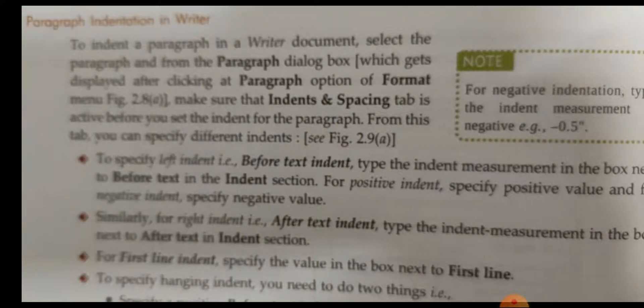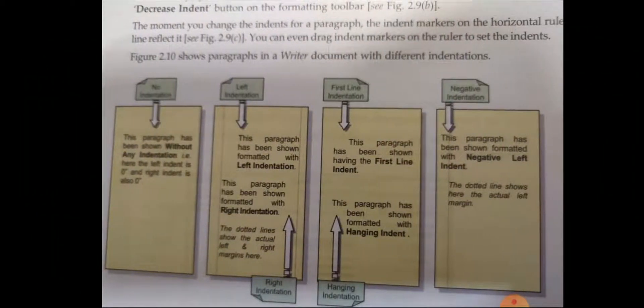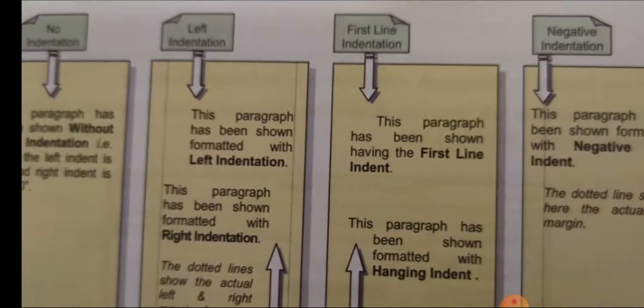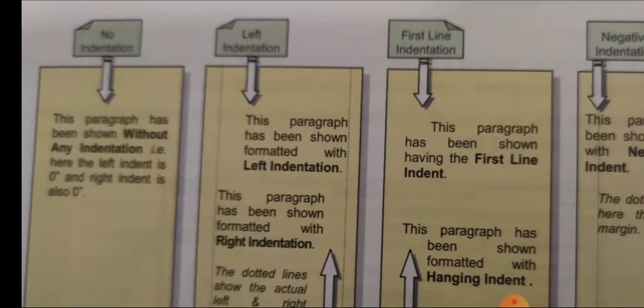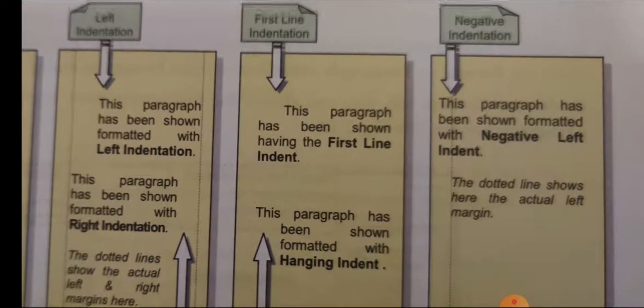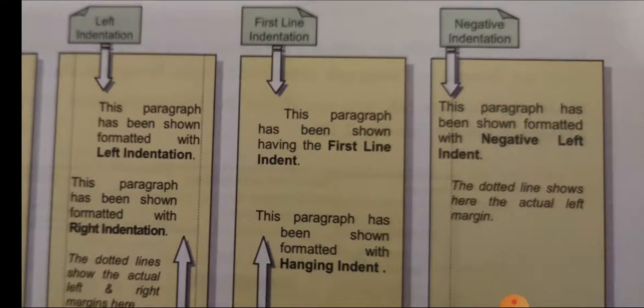Paragraph indentation means the space between the paragraph and the margin, so our text may appear inside or outside — that is known as indenting the text. We can set it according to our choice as shown in the picture. There is no indentation, then left indent where the text comes to the left side, first line indentation where the first line moves a bit, and negative indentation where the text comes into the margins.